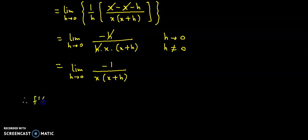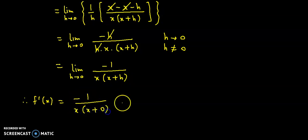Ab hamein mil jayega f dash x. Ismein hum h ki approaching value ye ye 0 substitute kar dete hain, to ye aayega minus 1 upon x into x plus 0. So that is minus 1 upon x into x, so our final answer is minus 1 upon x square.